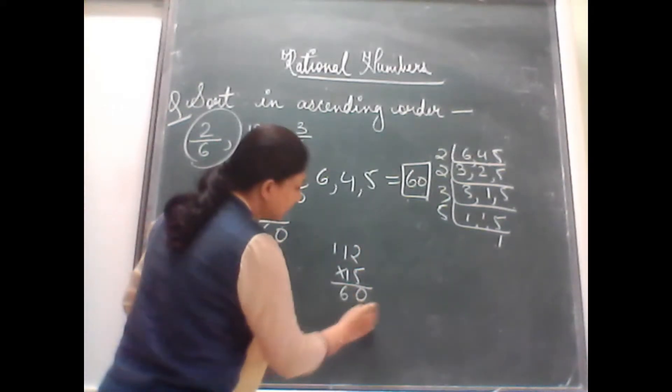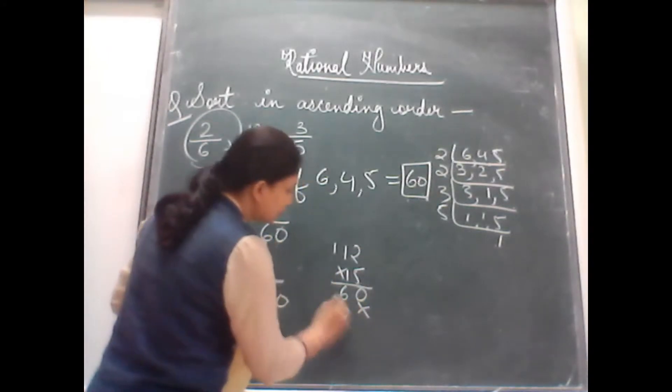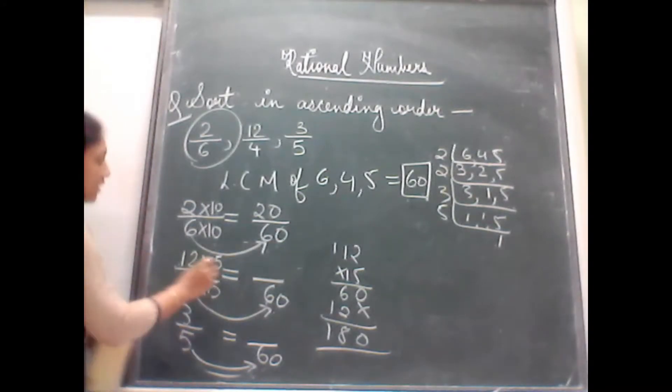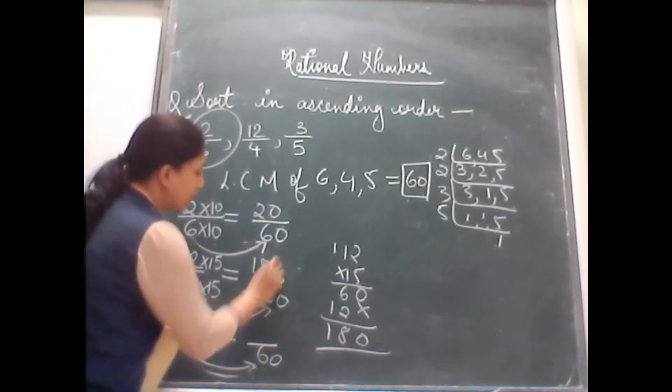In 4's table, when do you get 60? You get it in 15. 15 times 4 is 60. So here also you will multiply it with 15. So let us multiply 12 into 15. 5 is 10, carry 1. 5 is 5 and 6. Here it is 2 and 1. So the answer is 1, 18.